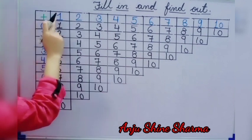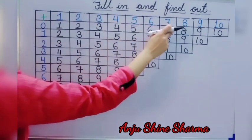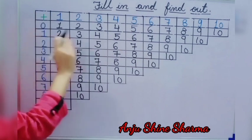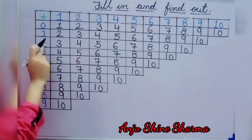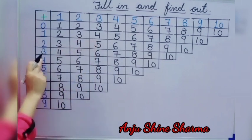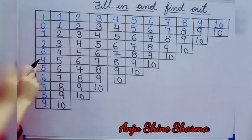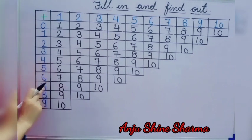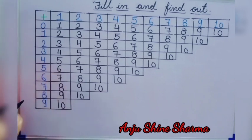Then we add 1 with 1, 2, 3, 4, 5, 6, 7, 8, 9 and 10, and we get the answer. Next we add 2. Next we add 3 with all these numbers. Then we add 4, 1 by 1 with all numbers. Then 5, then 6, then 7, then 8, and then 10. And in this way we get numbers from 1 to 10.